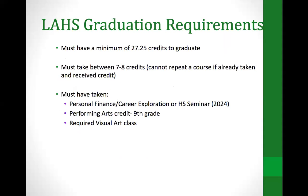We want to review briefly the graduation requirements so you have these in mind — they may be worth reviewing with your student. Over the course of four years, students must have a minimum of 27.25 credits to graduate. Each year, students are asked to take between seven and eight credits. You cannot repeat a course that you've already passed and receive credit for it again. Individual requirements include personal finance, career exploration, or high school seminar; a performing arts credit; and a required visual arts class.